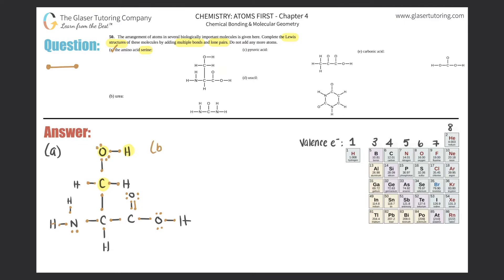B is urea. We have H-N-C-N-H with an H on top of each nitrogen, and an O attached to the carbon. All the hydrogens are good because they only have one electron. For this nitrogen, it has one, two, three — it needs two more, so I add a lone pair. This carbon has four valence electrons — one, two, three, four — all accounted for. This nitrogen also has three and needs a lone pair. And this oxygen has six valence electrons — one through six — so it's accounted for.